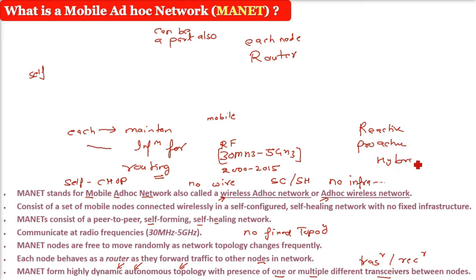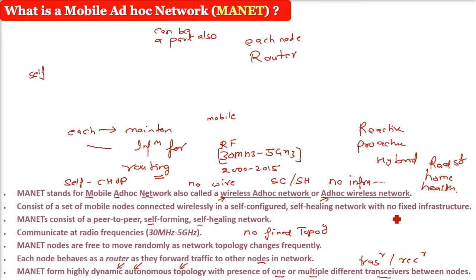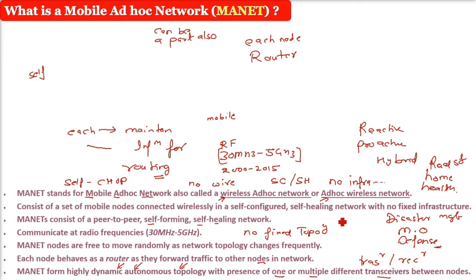MANETs can be used in road safety, ranging from sensors for the environment, home, and health. They can also be used in disaster rescue operations and military operations like air, land, and navy defense, weapons, robots, etc.